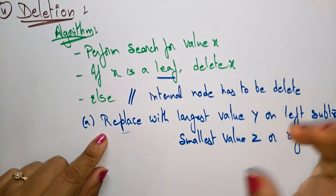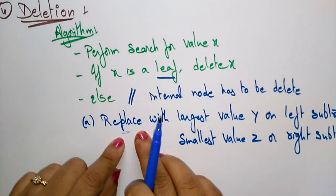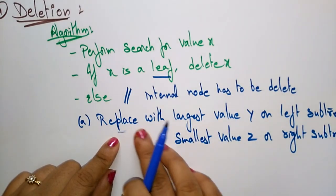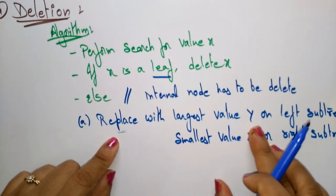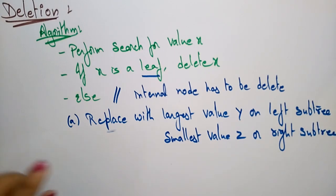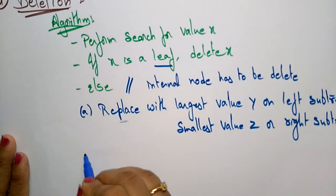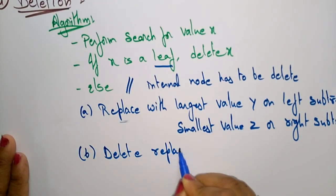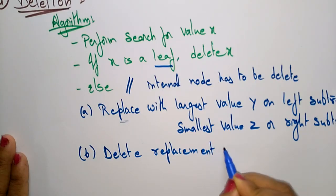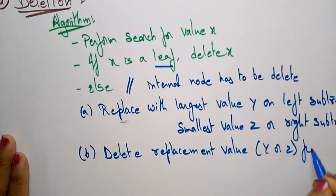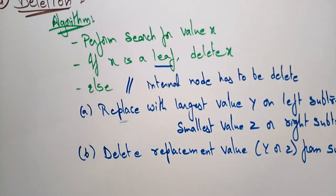Whatever element you deleted that is not a leaf node, you have to replace it with the largest value Y on the left subtree, or the smallest value Z on the right subtree. Then delete the replacement value — that is Y or Z — from the subtree. This is the algorithm for deletion.